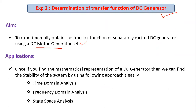We are taking a separately excited machine. What is a separately excited machine? For providing the excitation, we are using a separate source — providing the excitation through the field winding by connecting it to a separate source. That is what we call a separately excited DC generator.